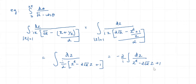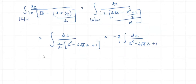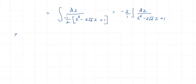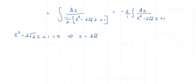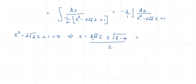Now I can factorize the denominator. Setting z² − 2√2 z + 1 = 0 and applying the quadratic formula gives z = (2√2 ± √(8−4))/2 = √2 ± 1. So the roots are z = √2 + 1 and z = √2 − 1.